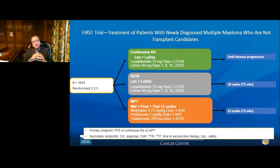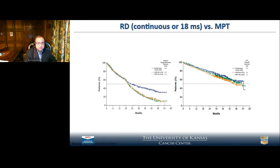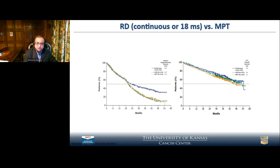Is quad the future standard of care? I don't know. I personally don't use quad up front, though I keep daratumumab for future use. Another common question: how long do I take chemo, especially if not going for transplant? The FIRST trial compared Revlimid with low-dose dexamethasone continued until disease progression versus two fixed cycles. Continuous Rd was much better than stopping treatment. If somebody decides not to undergo transplant, I usually continue at least eight to twelve months, then go to continuous Revlimid.